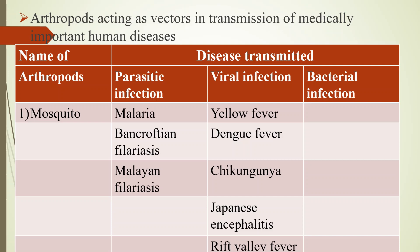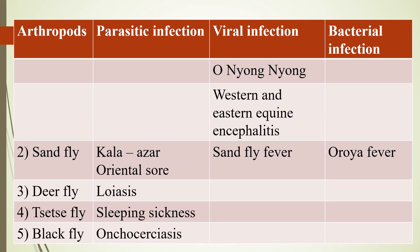Mosquitoes transmit viral infections such as yellow fever, dengue fever, chikungunya, Japanese encephalitis, Rift Valley fever, O'nyong-nyong, and Western and Eastern equine encephalitis. Almost all viral infections are transmitted by Aedes mosquitoes, such as dengue fever, yellow fever, chikungunya, and Zika virus. Notably, a mosquito-borne bacterial infection has not yet been identified.